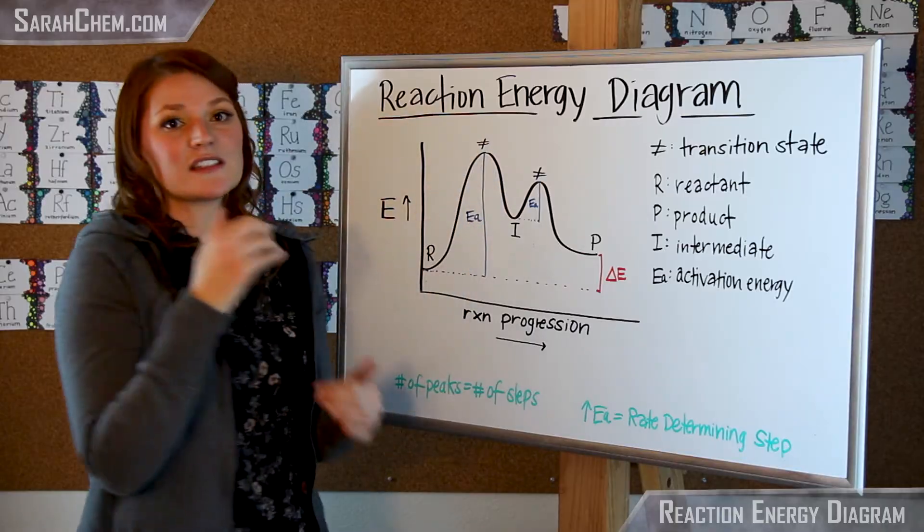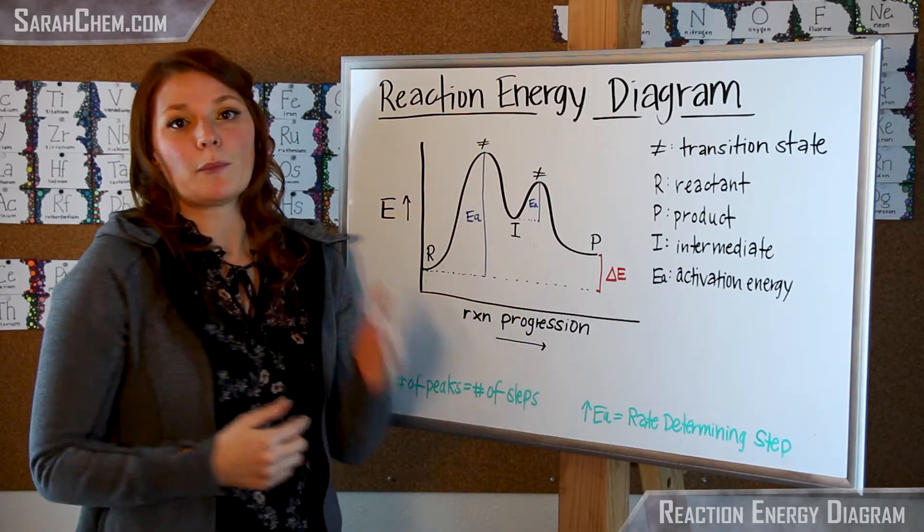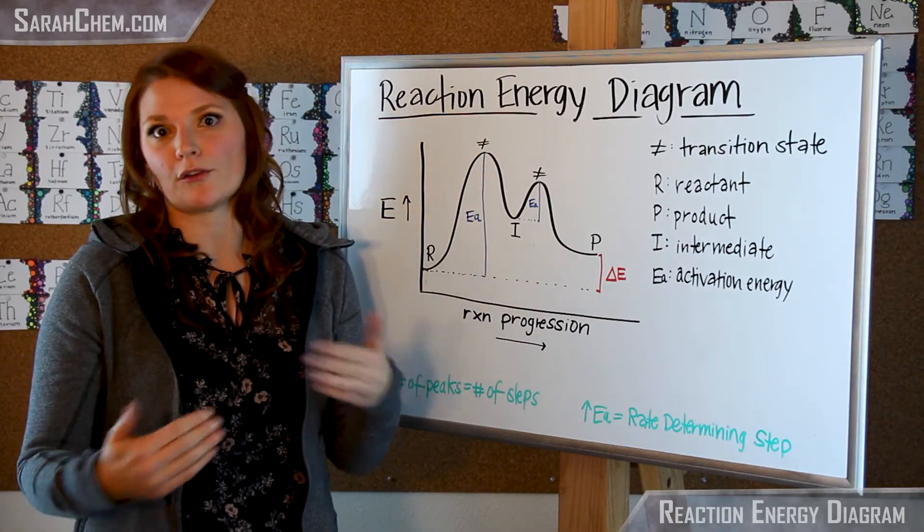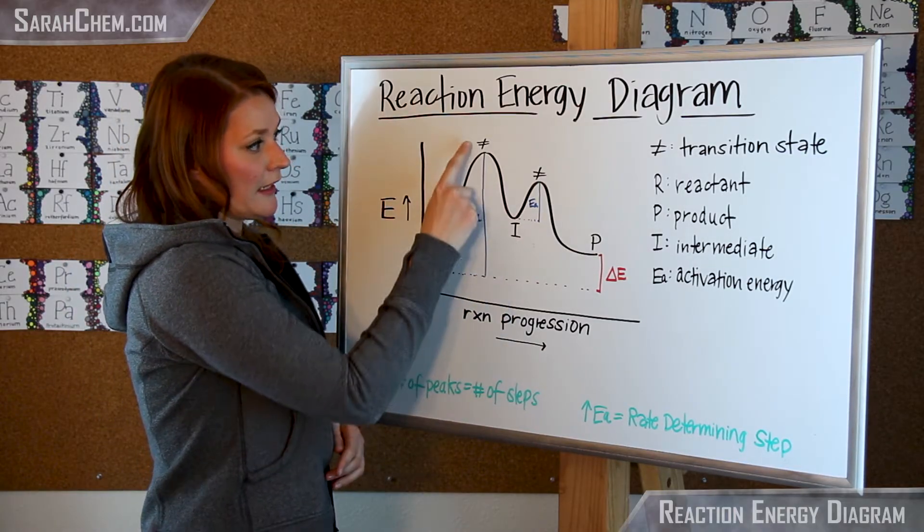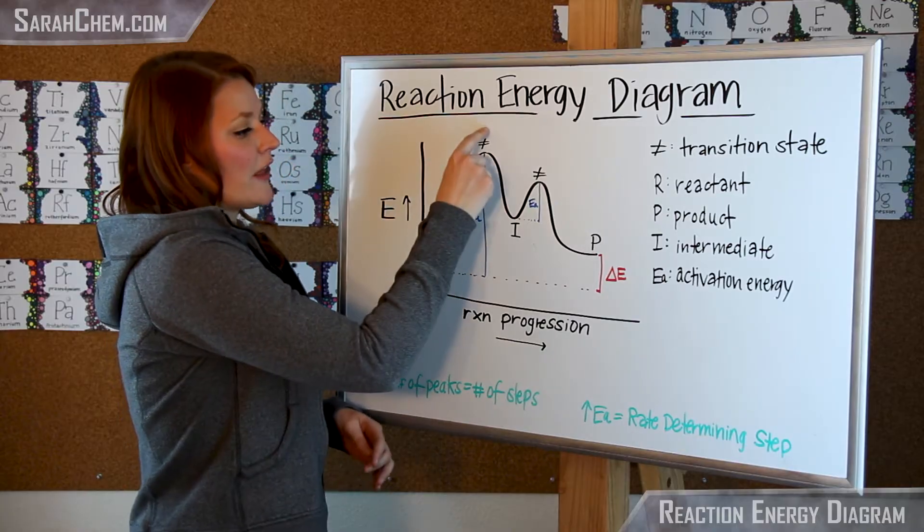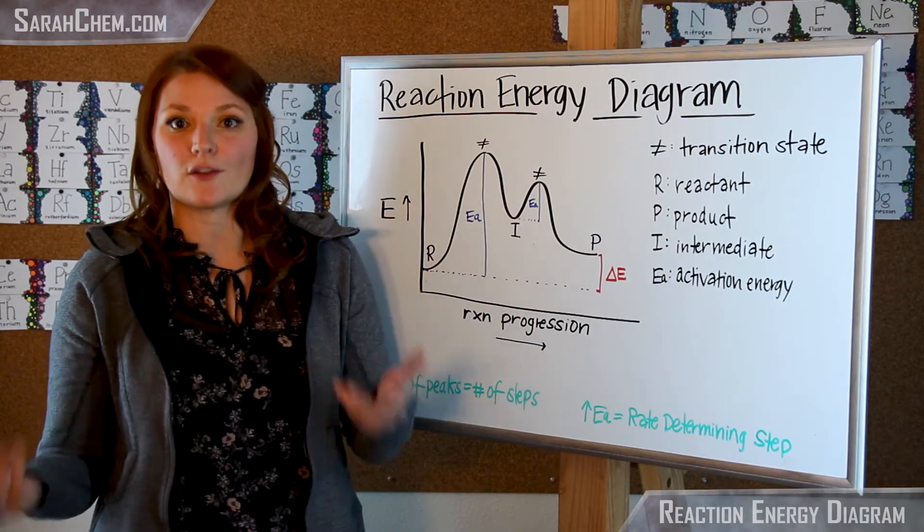The closer the transition state is to either the reactant or the product, the more it'll look like one or the other. Over here this transition state is closer to the intermediate than it is to the reactant, so that transition state would look more like the intermediate.